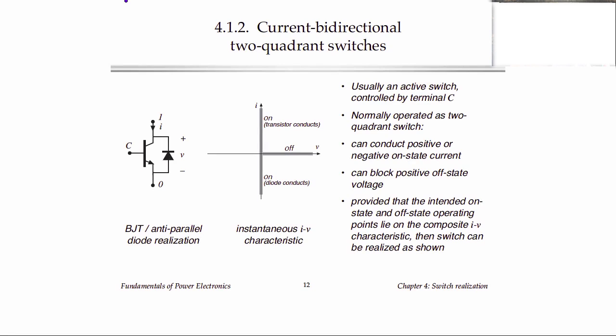In this lecture we'll talk about current bidirectional switches. Here is a realization, one way to realize a current bidirectional switch. This is a single pole, single throw switch that is actually a transistor connected with what we call an anti-parallel diode. The combination of the two is able to conduct current in either direction. So if we have our switch current positive, it can flow through the transistor, and if it's negative, it can flow through the diode.